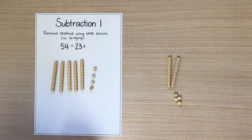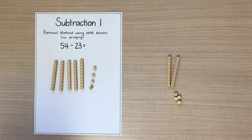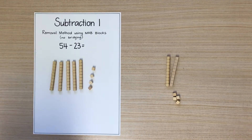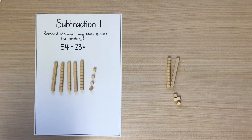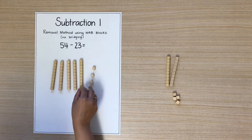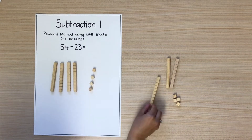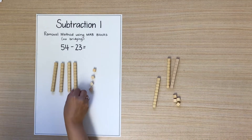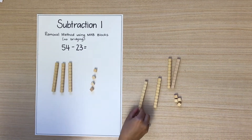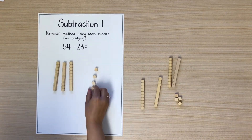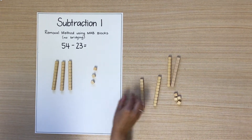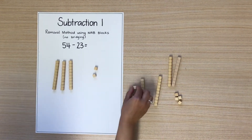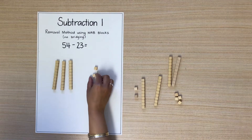Next we need to remove 23 MAV blocks. 10, 20, 21, 22, 23.